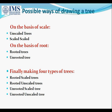On the basis of root, rooted trees have a root and unrooted trees are without the presence of a root. With the help of these two bases, there are four different types of trees which can be constructed: rooted scaled trees, rooted unscaled trees, unrooted scaled trees, and unrooted unscaled trees.